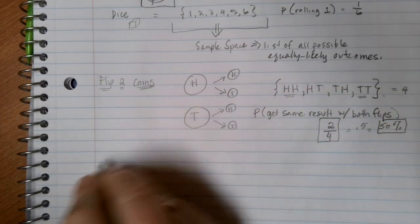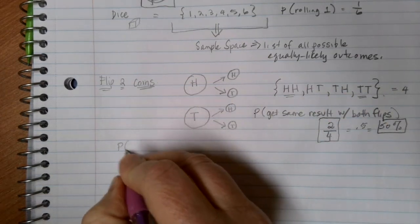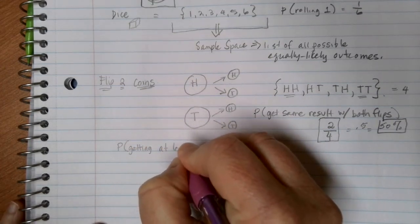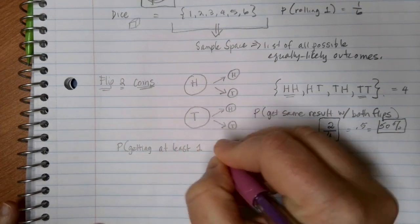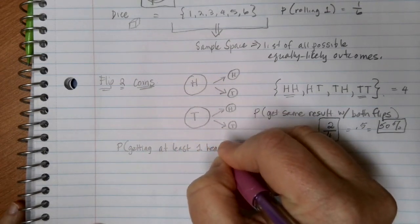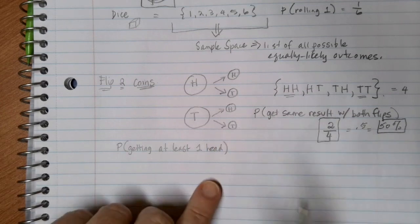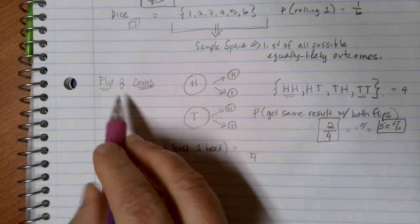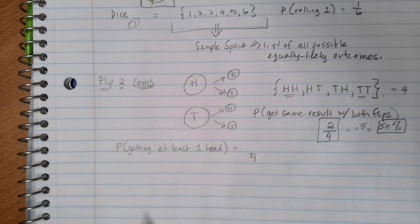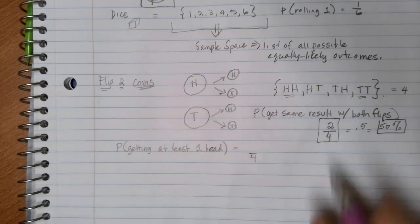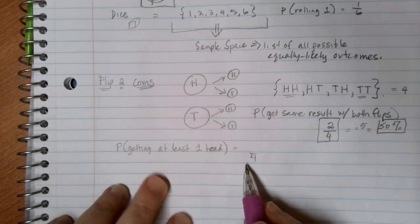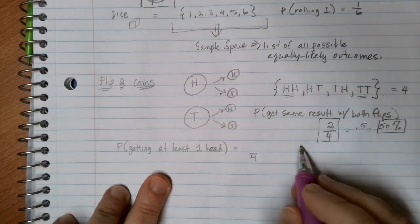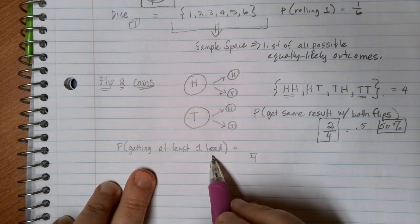Let's say instead that I want the probability of getting at least one head from flipping my coin. Well, I still have four equally likely outcomes because my event that was going on here is I'm flipping two coins. My probability then is going to be those four equally likely outcomes. And in this case, how many ways can I get at least one head?